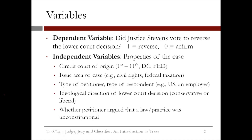Our independent variables are six different properties of the case. The circuit court of origin is the circuit or lower court where the case came from. There are 13 different circuit courts in the United States — the 1st through 11th and Washington DC courts are defined by region, and the federal court is defined by the subject matter of the case. The issue area of the case gives each case a category, like civil rights or federal taxation.